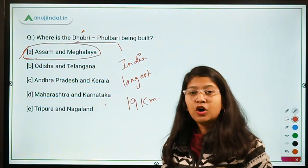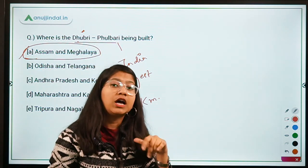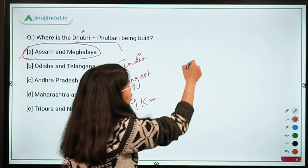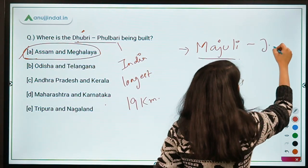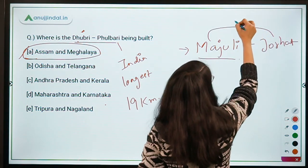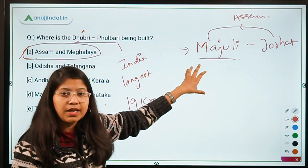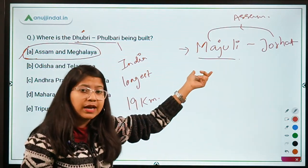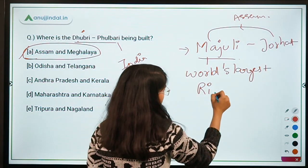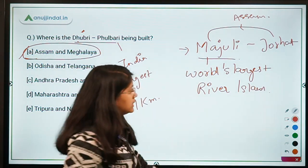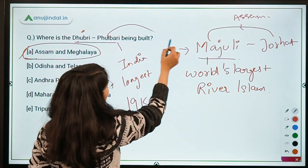Apart from laying the foundation stone for the Dubri-Phulbari bridge, Prime Minister Narendra Modi also performed the bhumi pujan for another bridge in Assam — the Majuli bridge, from Majuli to Jorhat, both places in Assam. A peculiarity attached to Majuli is that it is the world's largest river island. Both these bridges are being built on the Brahmaputra river.